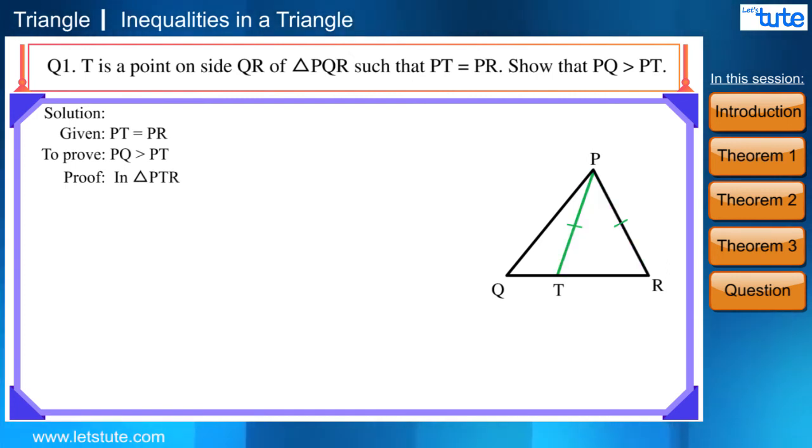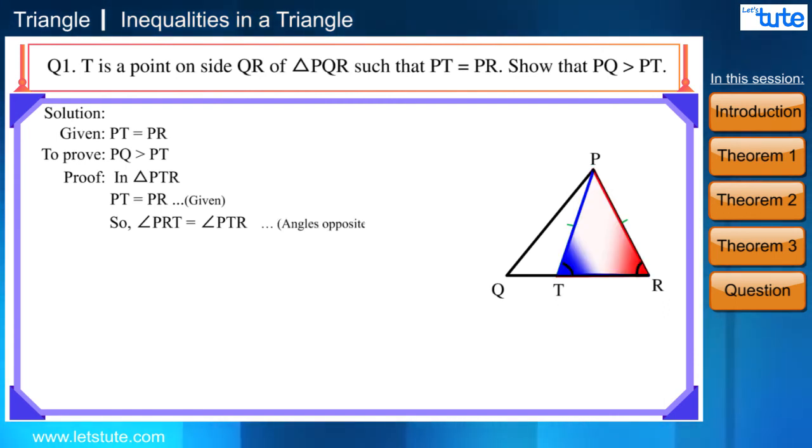In triangle PTR, PT is equal to PR which is given. And therefore, angle PRT is equal to angle PTR. The reason is these are the angles opposite to equal sides. Let us name it as equation number 1.